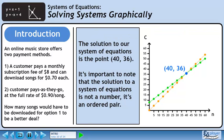The solution to our system of equations is the point (40, 36). It's important to note that the solution to a system of equations is not a number, it's an ordered pair.